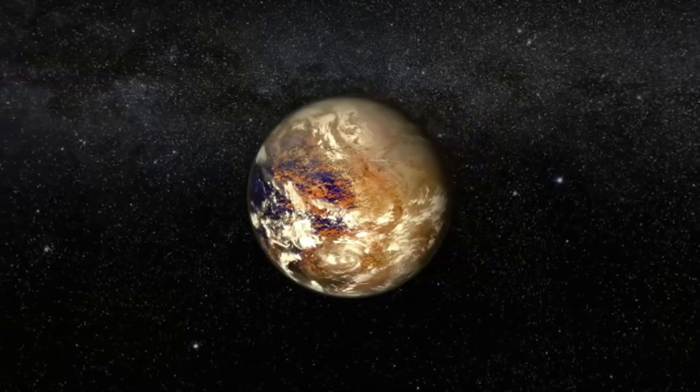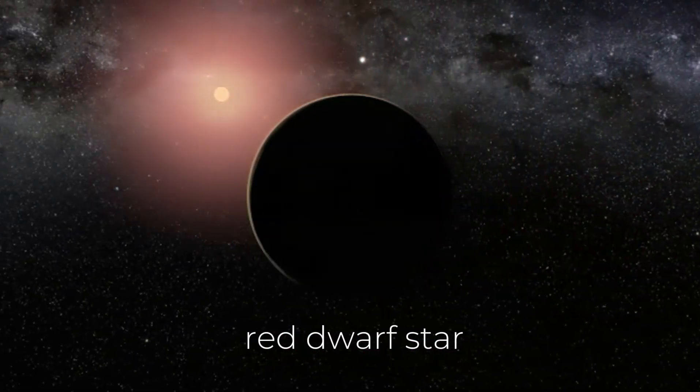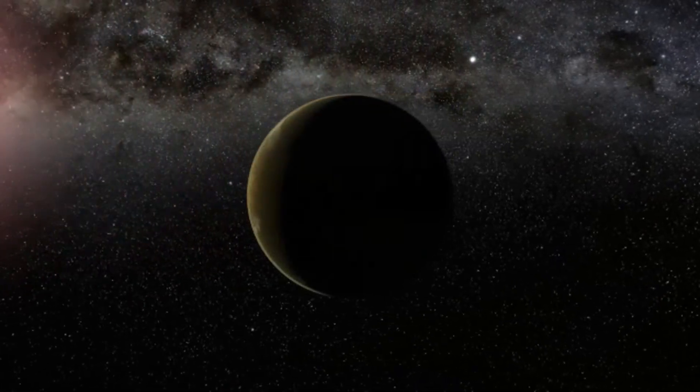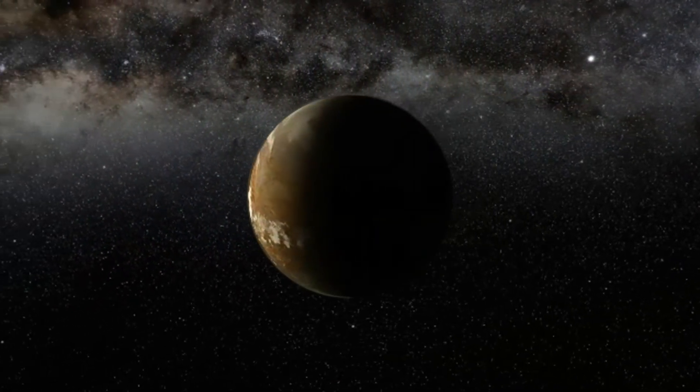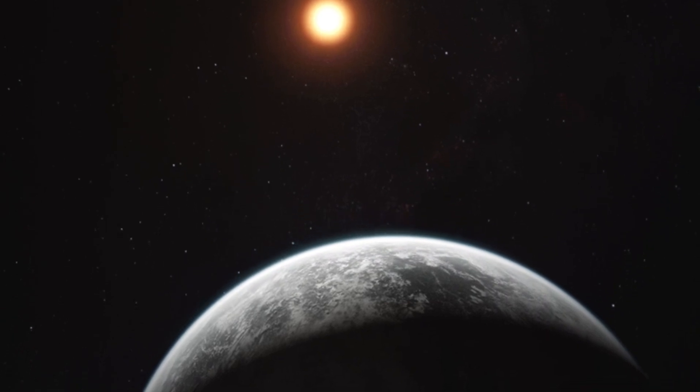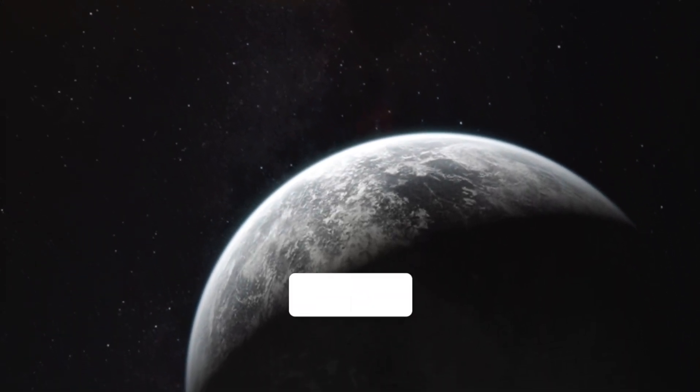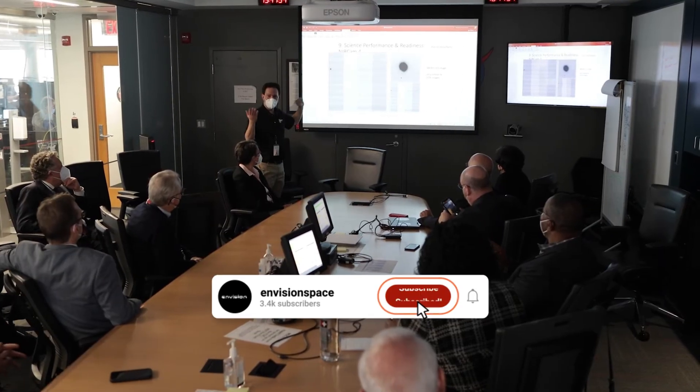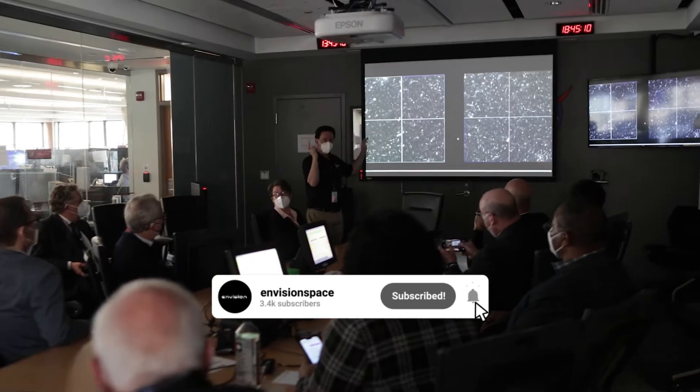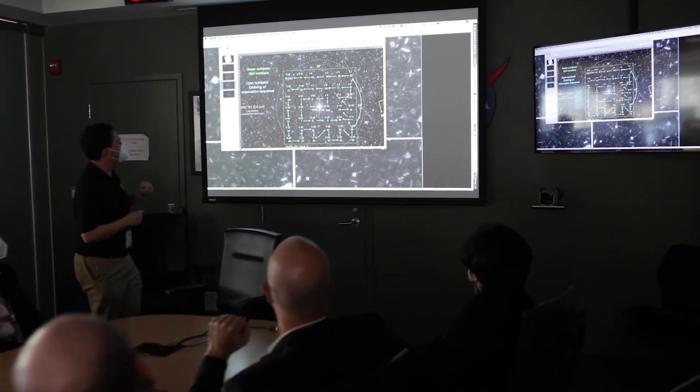But the problem was that Proxima B orbits a red dwarf star, and red dwarfs are not exactly friendly neighbors. These stars are known for their violent behavior, often unleashing intense solar flares. This raises some serious concerns. A flare could easily strip away a planet's atmosphere, leaving it exposed and potentially uninhabitable. So even though Proxima B seemed promising, there were some big doubts about its ability to support life.